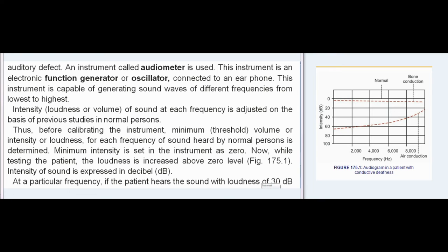The intensity, loudness, or volume of sound at each frequency is adjusted on the basis of previous studies in normal persons. Before calibrating the instrument, the minimum threshold volume or intensity or loudness for each frequency of sound heard by normal persons is determined. This minimum intensity is set in the instrument as zero.